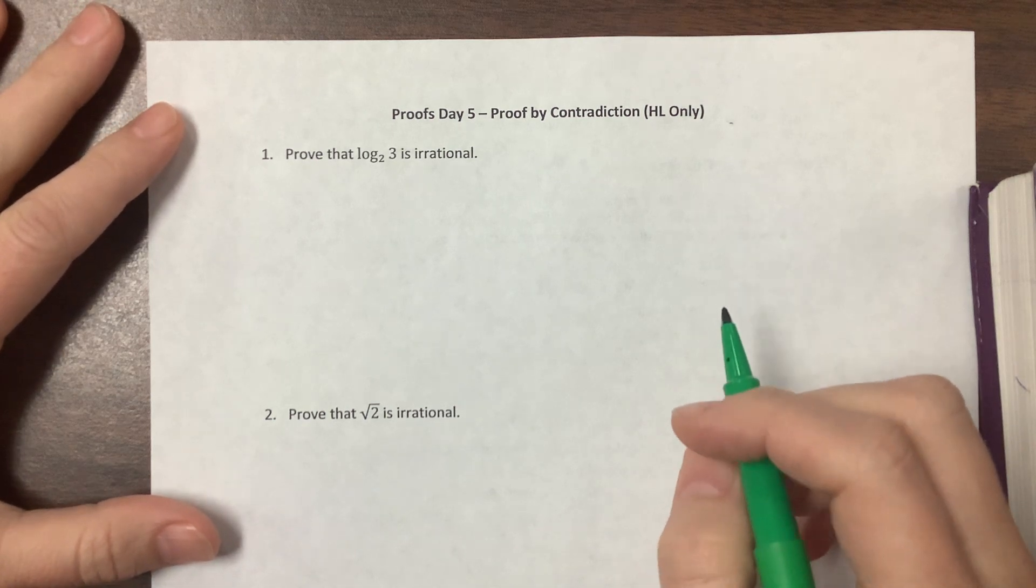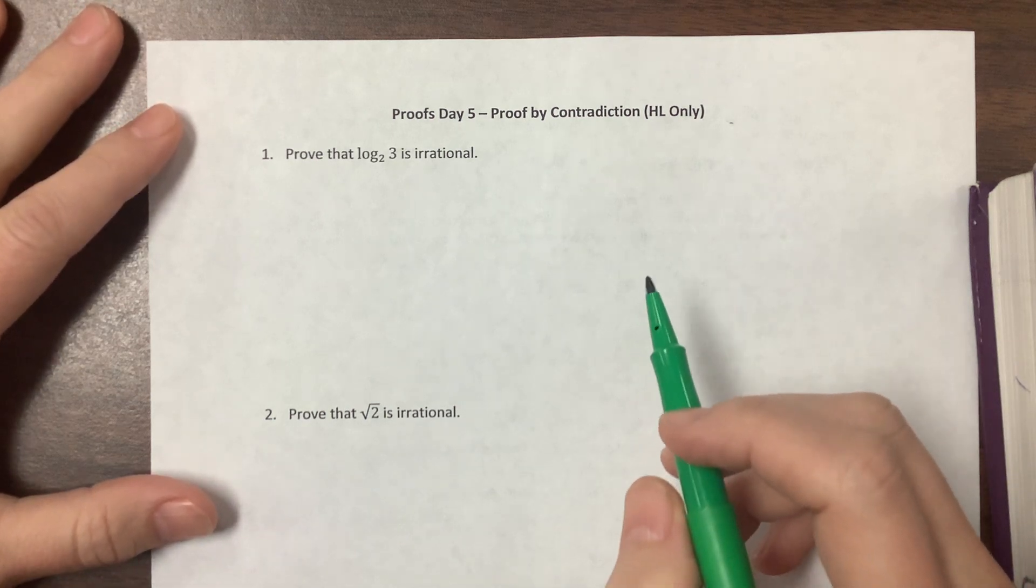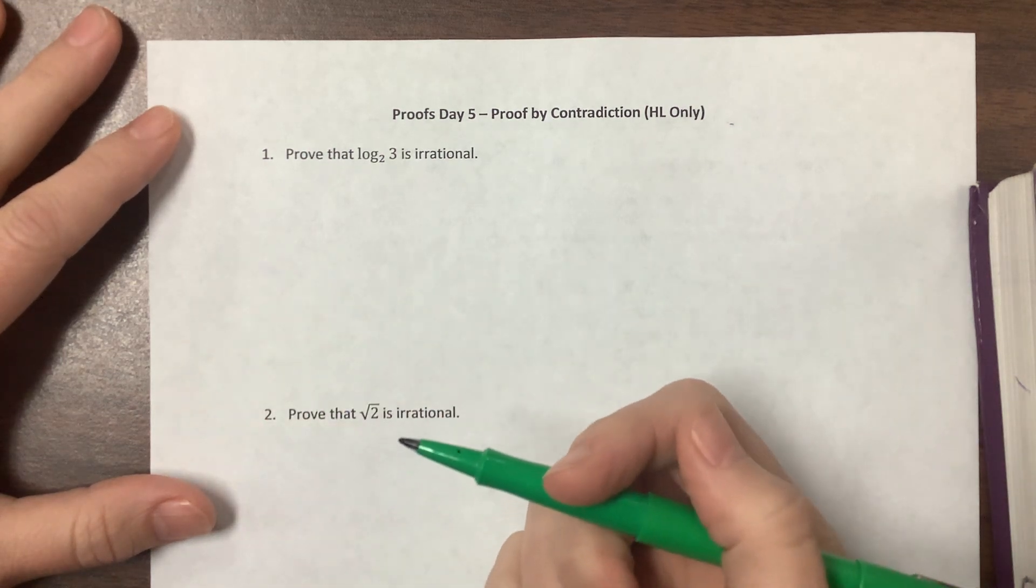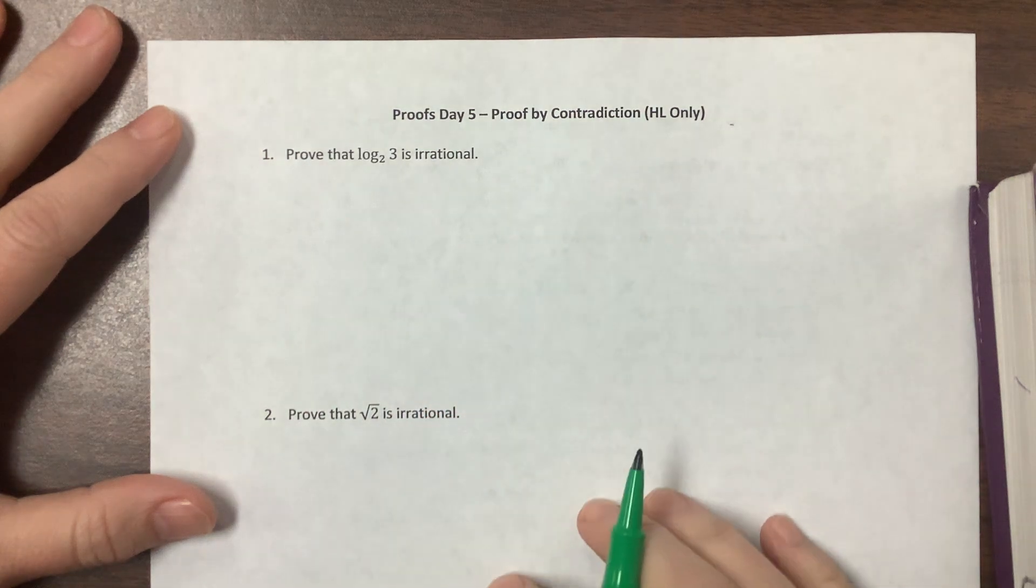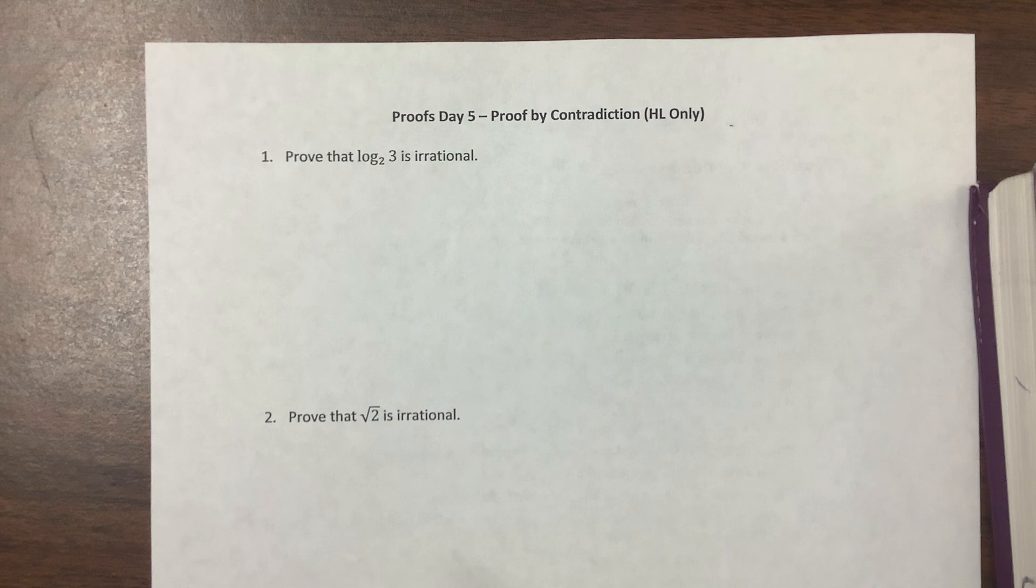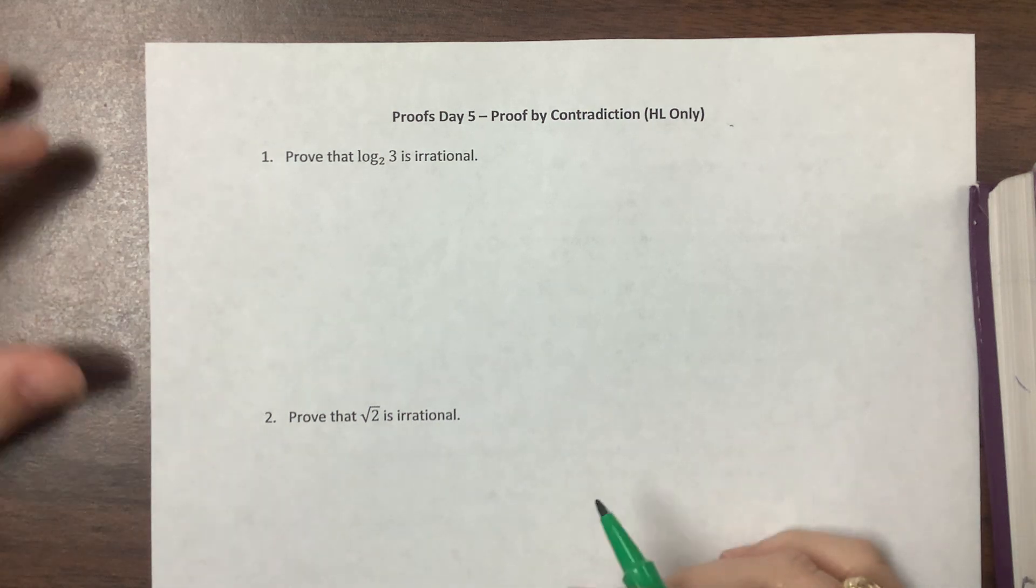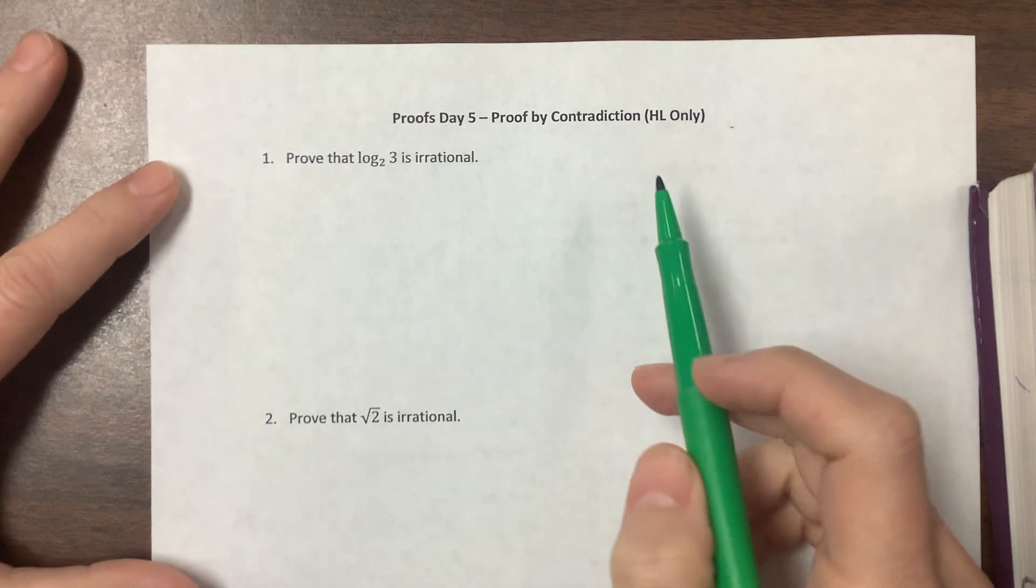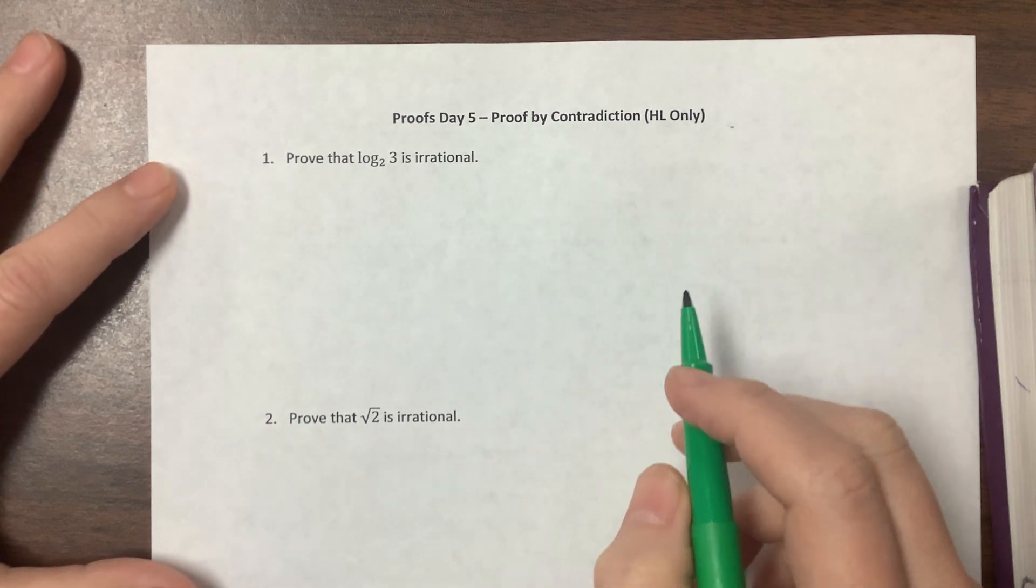So the idea with proof by contradiction is that we assume the opposite of what we're trying to prove, and then we work under that assumption and find something that's obviously wrong. Therefore, our initial assumption must have been false. So we find a contradiction somewhere.